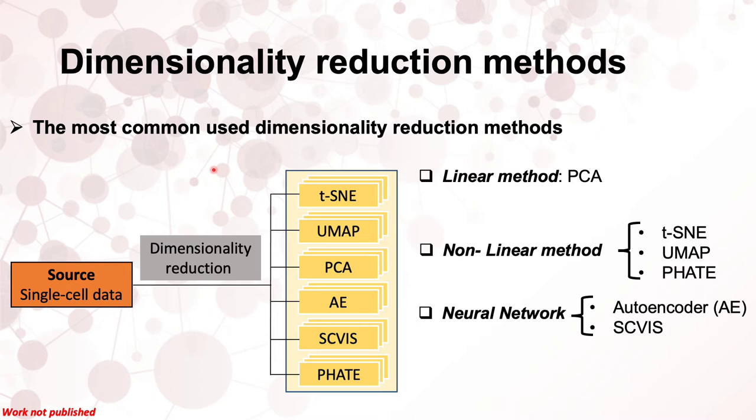After reviewing 24 different dimensionality reduction methods, we selected the most commonly used ones to evaluate in the computational framework presented in this work. Those are t-SNE, UMAP, PCA, Autoencoder, SCVS, and PHATE.